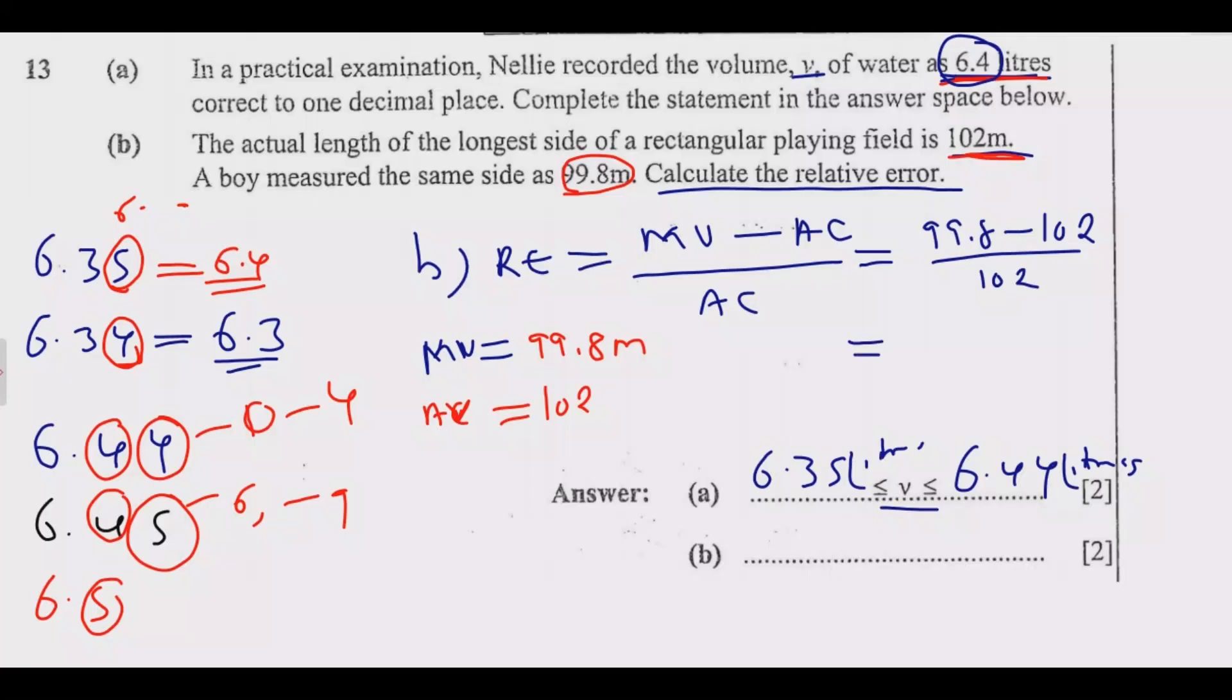We are going to have 99.8 minus 102 over 102. This is going to give me 99.8 minus 102, it will give me negative 2.2. But now, because this value should be an absolute value, the difference should be an absolute value. Whether it's negative or positive, we take it as a positive number. So this will give me 2.2 over 102.